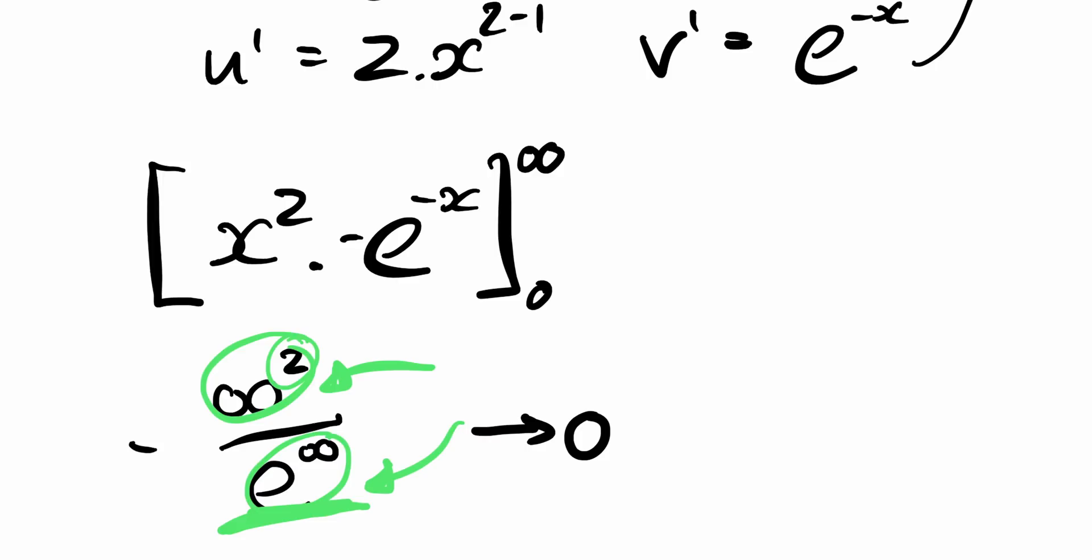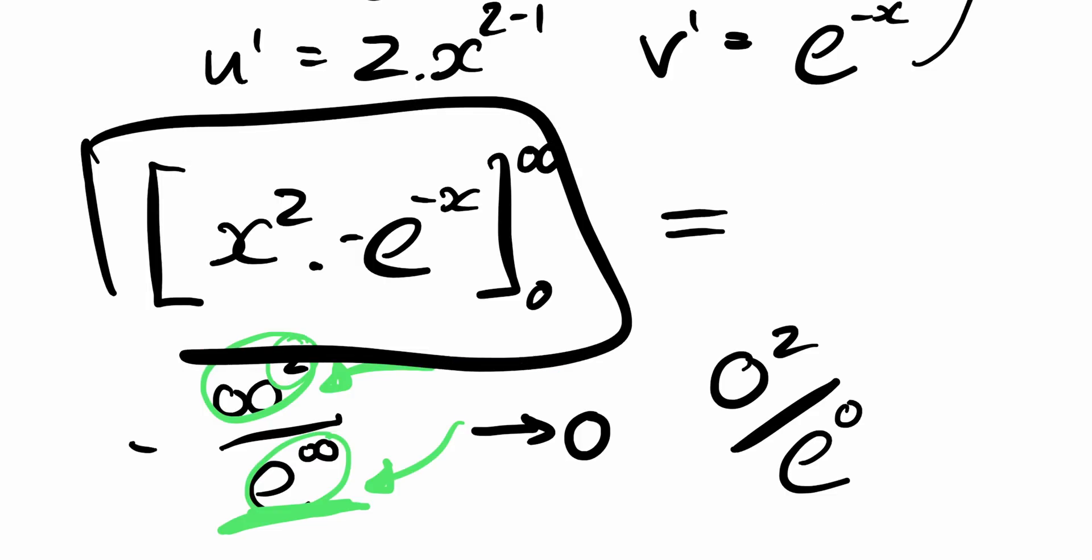And actually when we put the zeros into both of them, zero to the z divided by, well, e to the zero is going to give us a one. So zero divided by one is zero. So basically this whole thing here equals zero. So we can ignore it.